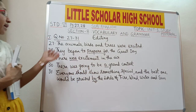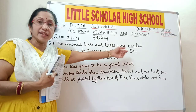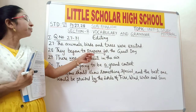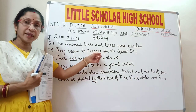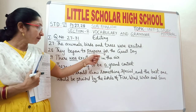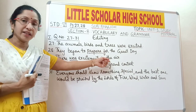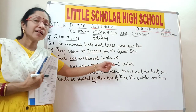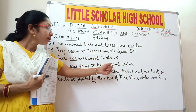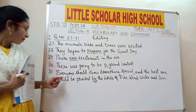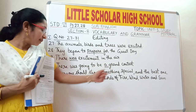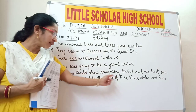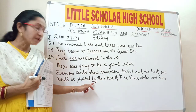Let us review passage 1. 'The animals, birds and trees were excited' — 'excites' replaced with 'excited'. 'They began to prepare' — 'prepared' replaced with 'prepare'. 'There was excitement' — 'were' replaced with 'was'. 'There was going to be a grand contest' — article 'the' replaced with 'a'. 'The best one would be praised by the lords of fire' — preposition 'with' replaced with 'by'.